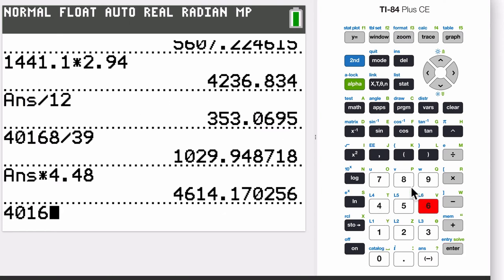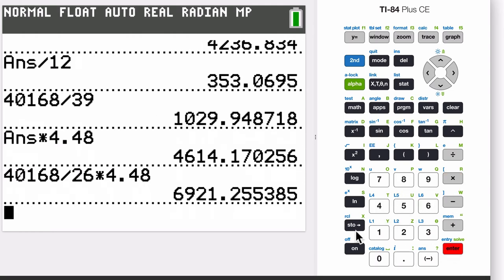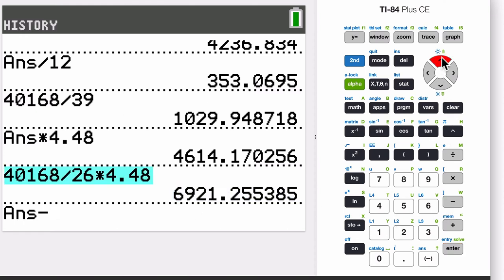Then we repeat the same process, the miles driven in a year, divided by 26, the miles per gallon of the non-hybrid. And then I'm just going to throw that in there, times 4.48, all in one step. So it costs more money to drive non-hybrid. So the question is, how much more?